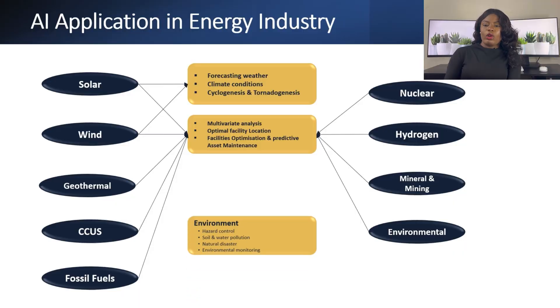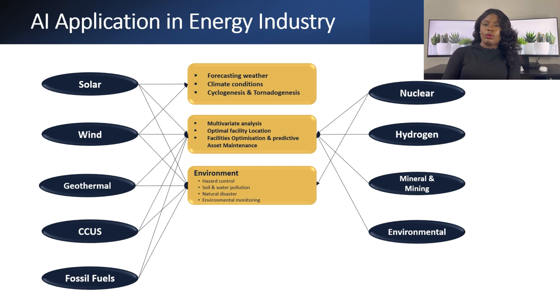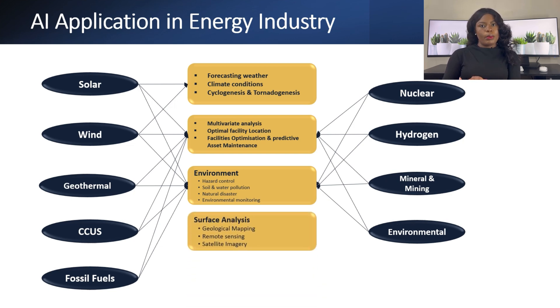Next, we have environment controlling: hazard control, soil and water pollution, natural disaster, and environmental monitoring. Machine learning or AI can help handle waste from our different resources — to know how to properly dispose of them and predict contamination of water or soil around facilities. Machine learning can also help with surface analysis, geological mapping, satellite imagery, and remote sensing. We have lots of satellite images and we can use machine learning to analyze them to detect different things.